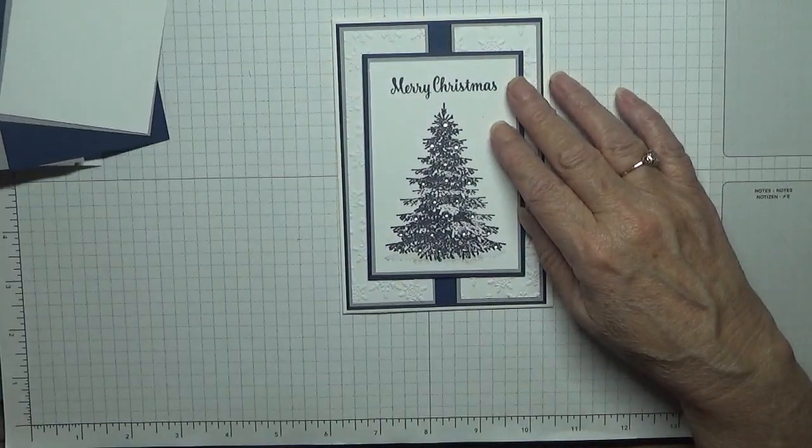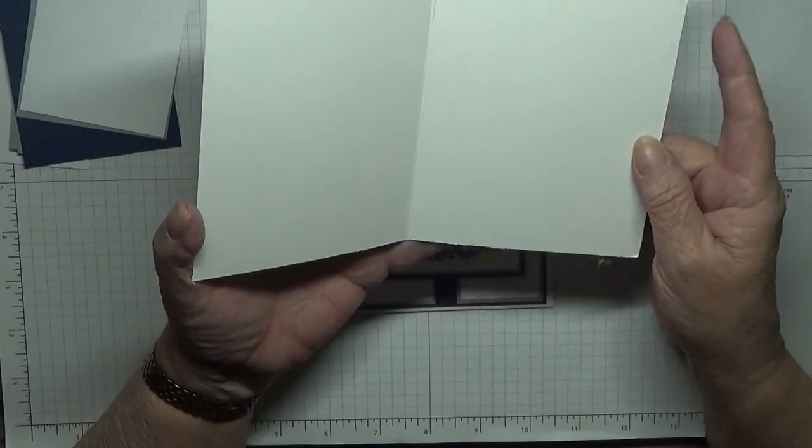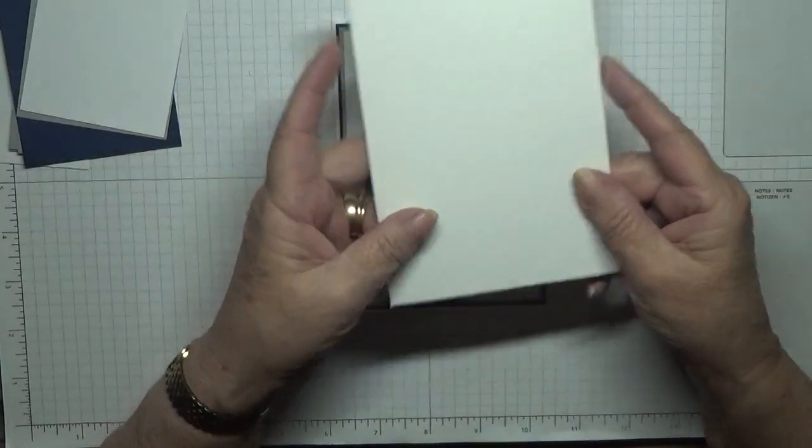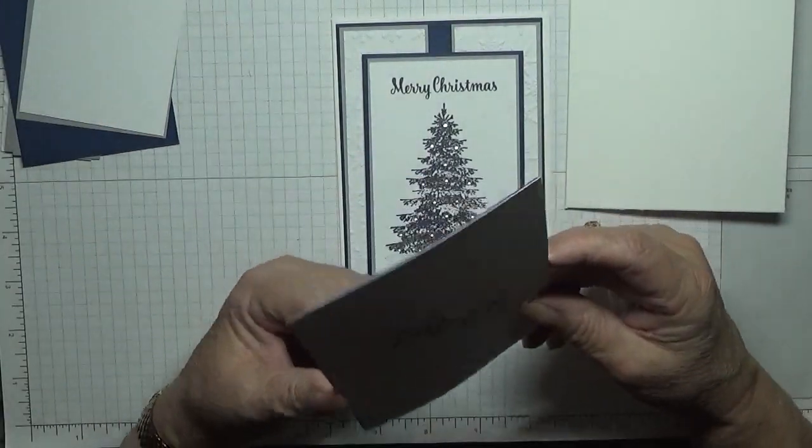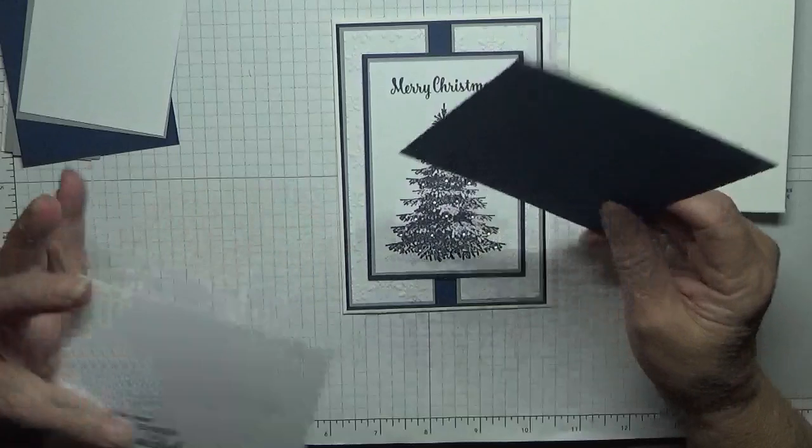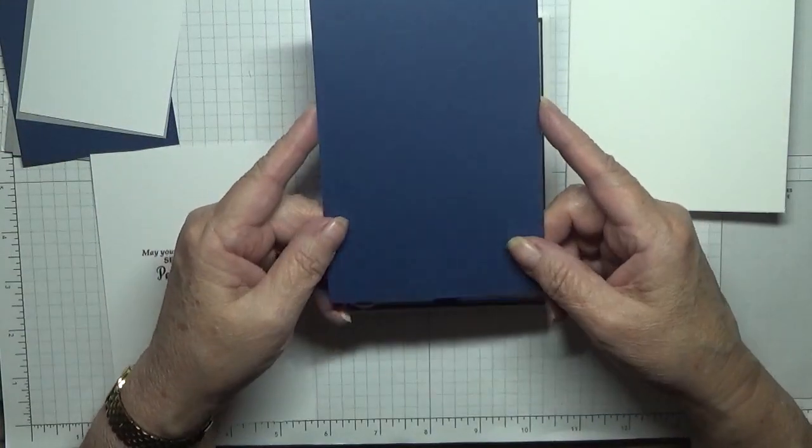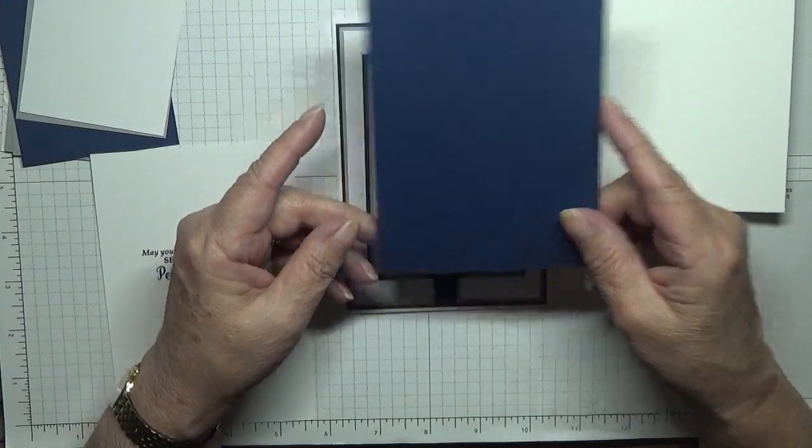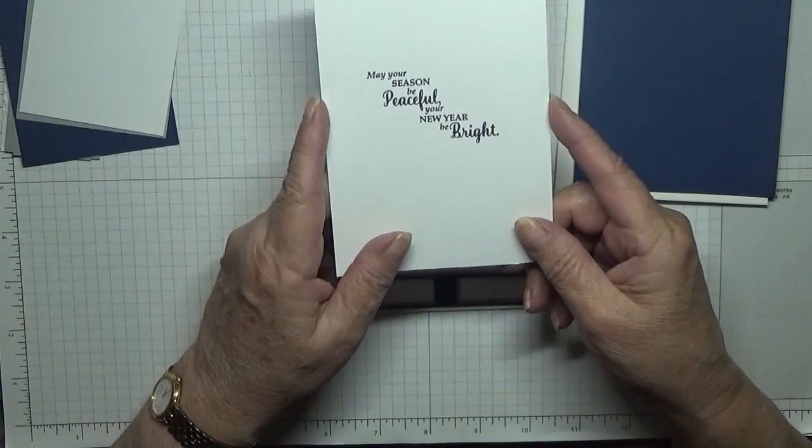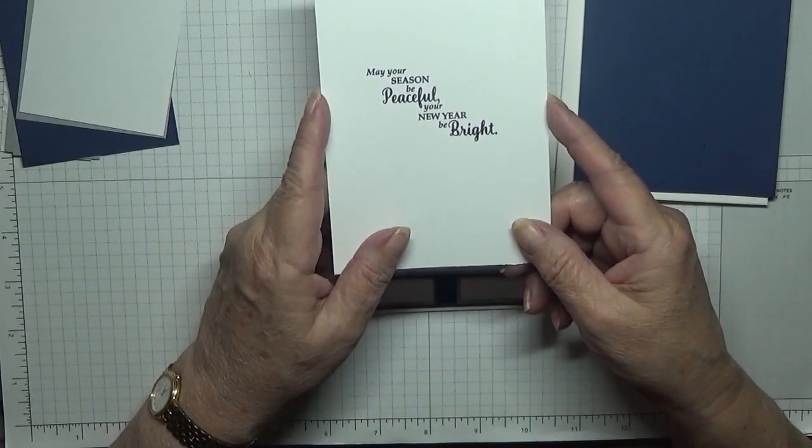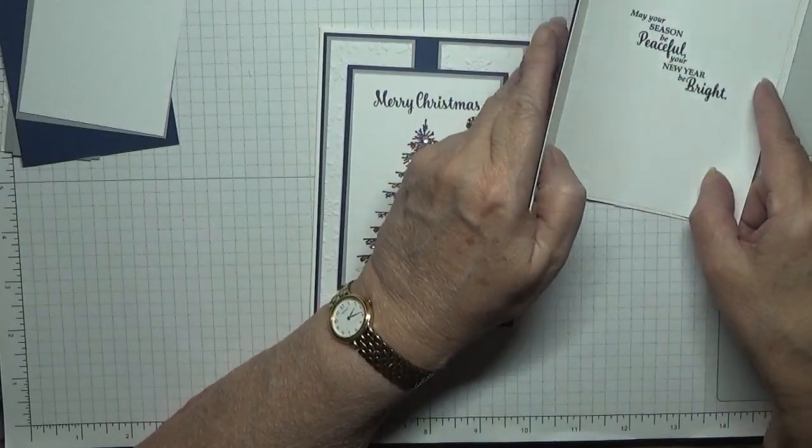The card stock I used is a white card base of eight and a quarter by five and seven eighths scored at four and one eighth, folded in half. I have a blue piece of card stock at five and five eighths by three and seven eighths. Also have a white piece which I've already stamped in there. Inside, may your season be peaceful and your new year be bright, and that will go on the inside.